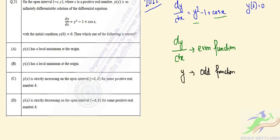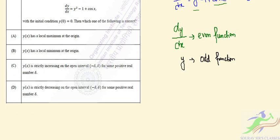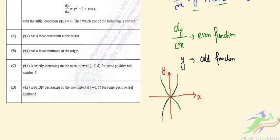How does an even function look if we draw a curve? Suppose these are the y and x axes. An even function is symmetrical about the origin. This function is passing through the origin, and we have the condition y(0) = 0. Now is it possible to find a local maximum or minimum at the origin? It is not possible to find a local minimum or maximum at this point.